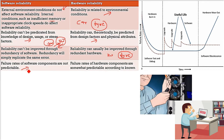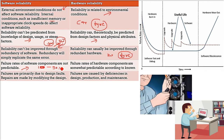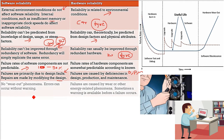The failure rates of software components are not predictable because only 10% of the functionality is used 90% of the time. In hardware, failure rates of components are predictable. The main cause of software failures is design faults — repairs can only be done by going to the code and the design. Software failures can be caused by any kind of deficiency in design, production, or maintenance. There is no wear and tear phenomenon in software; errors can come anytime without any warning, triggered by any function that has never been used before.